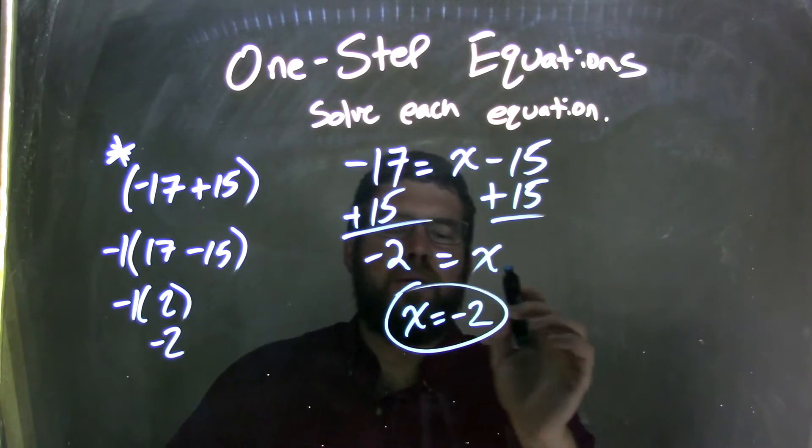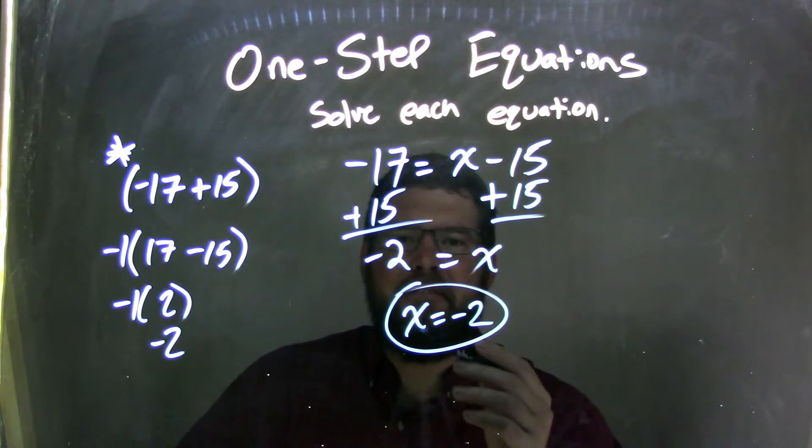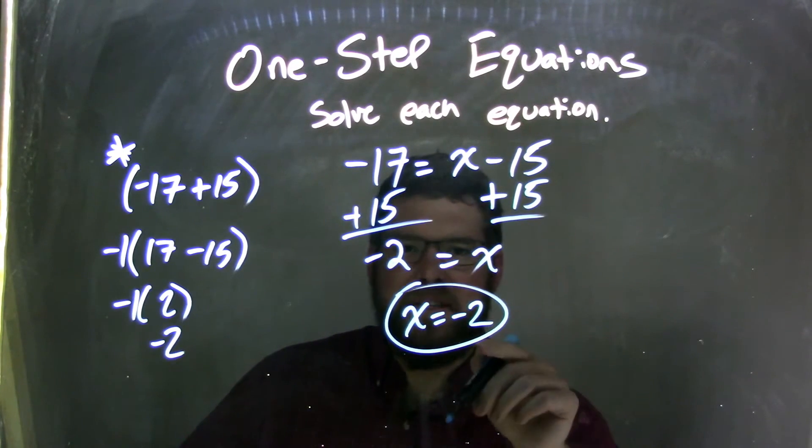So I have negative 2 equals x. Let's rearrange it, put x first, and I have x equals negative 2, which is my final answer. Thank you.